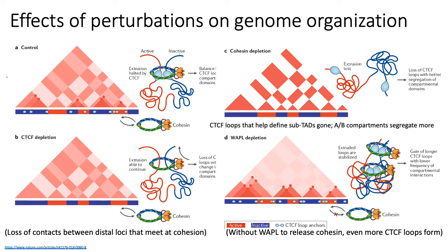Part C shows what happens when you deplete cohesin. Since cohesin's role is to facilitate chromosome looping, having no cohesin means no looping, and you lose a lot of TAD structure. In the Hi-C heatmap for part C, you lose most TAD structure, but you still see formation of AB compartments — evidenced by banding in the Hi-C map — because AB compartment formation is largely independent of looping.